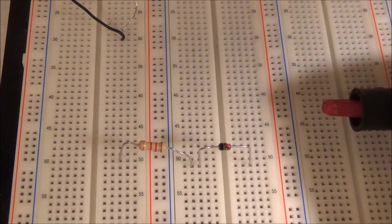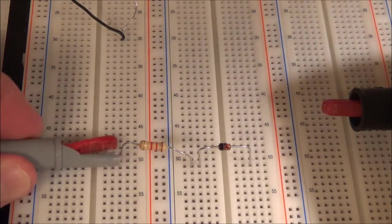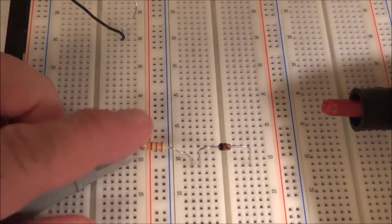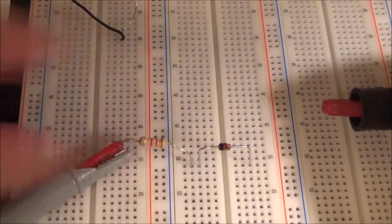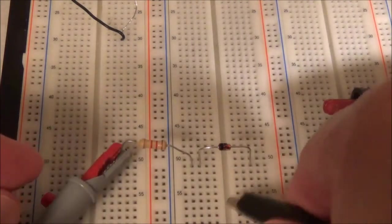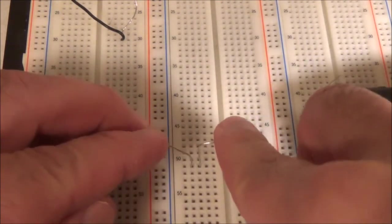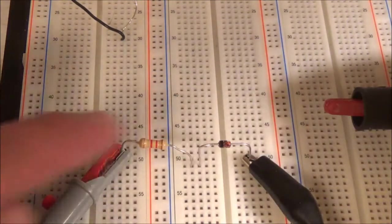I'm going to hook everything up. The positive lead of the power supply is going to go right here to this end of that resistor, and the negative is going to the other end of the zener.